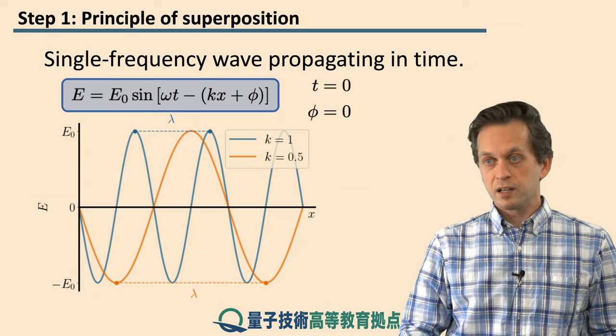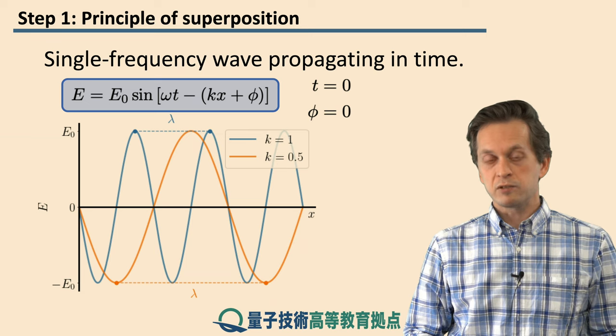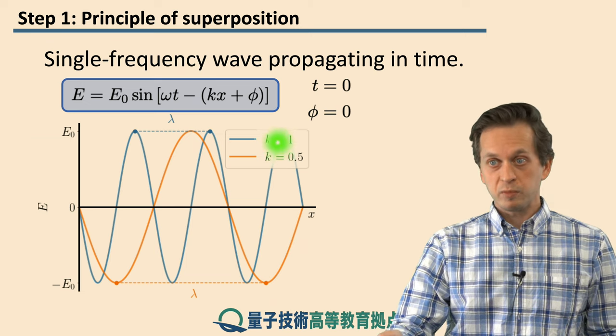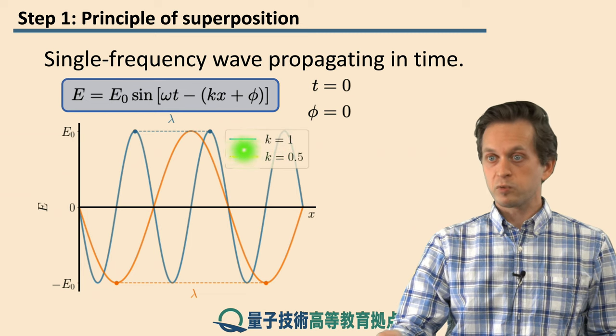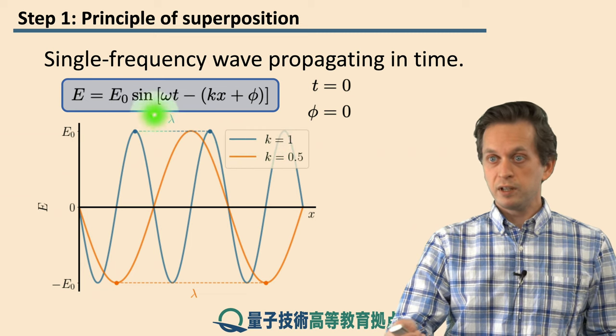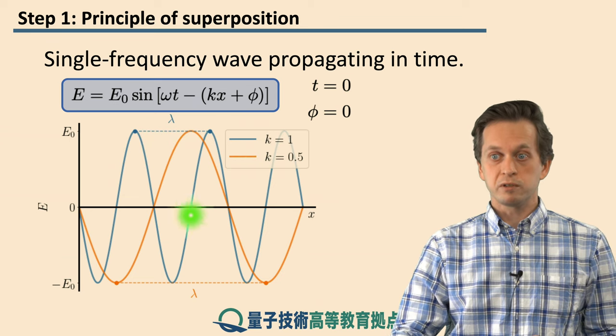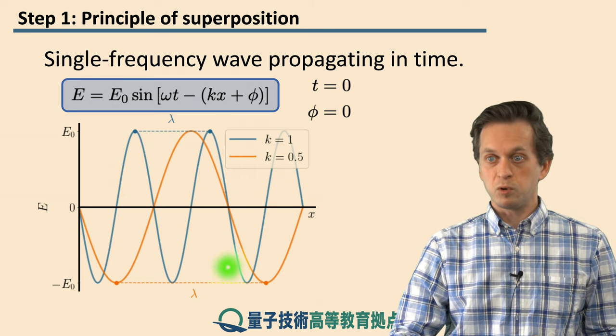And as we said, the wave number k is related to the wavelength. The larger the wave number is, the shorter the wavelength. So we see for k equals to one, the wavelength is shorter than for the other wave, where k equals to zero point five, represented over here.